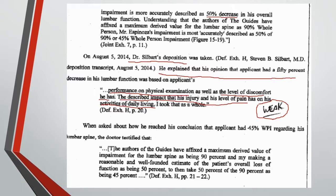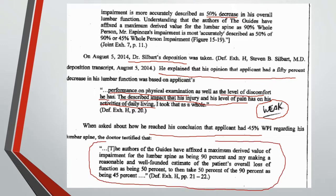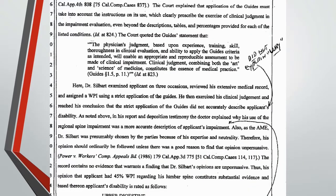When questioned further about how he reached the conclusion of 45% whole person impairment, the doctor simply went through the mathematics: 50% loss of function of the lumbar spine, 50% of 90% equals 45%. Even though the doctor's explanation was weak, the court upheld the alternative impairment rating of 45% whole person impairment, citing the great loophole from the AMA guides which provides for alternative impairment ratings and deviations from the strict applications of the AMA guides.